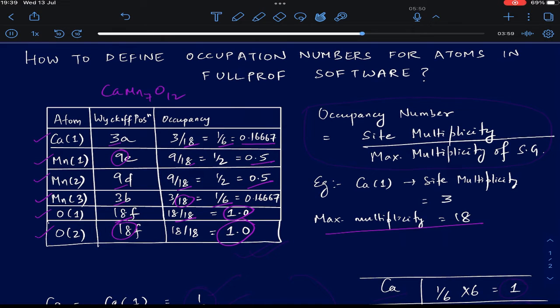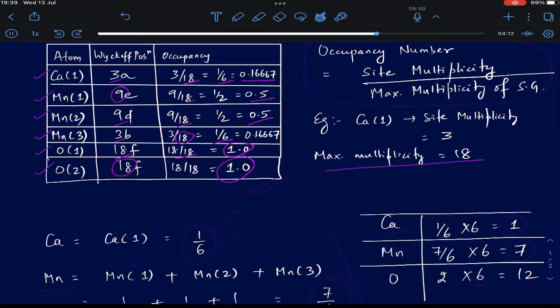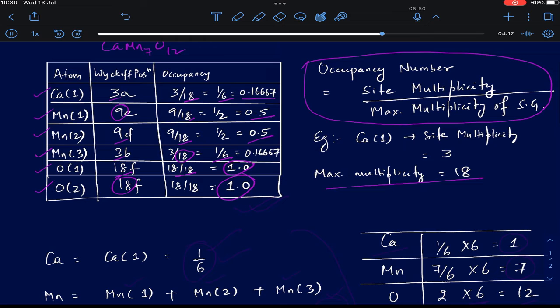Now these are the numbers that you will input in the FullProf file to define the occupancy of each element. So basically, if you try to generalize, the occupancy number in FullProf is given by site multiplicity divided by maximum multiplicity of the space group.